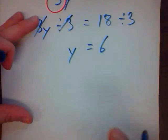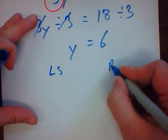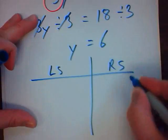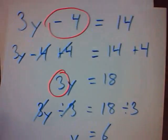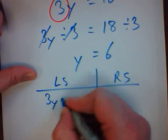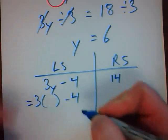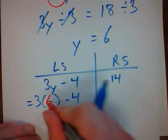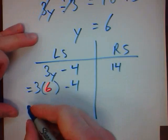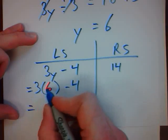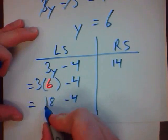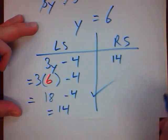Once again, I check my work. See if I did it right. Original question. 3y minus 4. And 14. I think that y is 6. Let's see if I get it right. 3 times 6. That's 18. 18 minus 4 is 14. I probably did that question correctly. Another example.